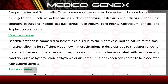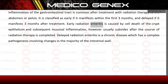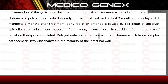Radiation enteritis. Inflammation of the gastrointestinal tract is common after treatment with radiation therapy to the abdomen or pelvis. It is classified as early if it manifests within the first three months, and delayed if it manifests three months after treatment. Early radiation enteritis is caused by cell death of the crypt epithelium and subsequent mucosal inflammation, but usually subsides after the course of radiation therapy is completed. Delayed radiation enteritis is a chronic disease with a complex pathogenesis involving changes in the majority of the intestinal wall.